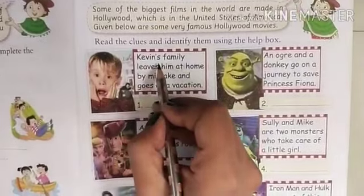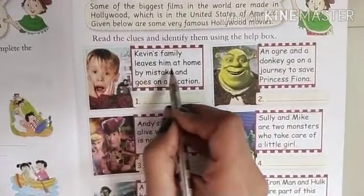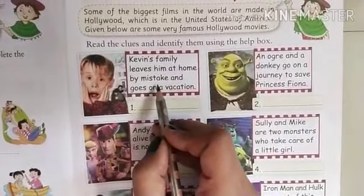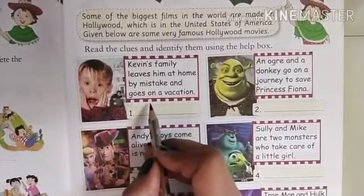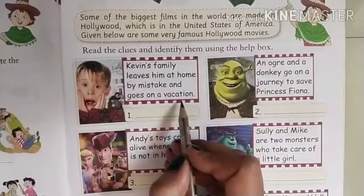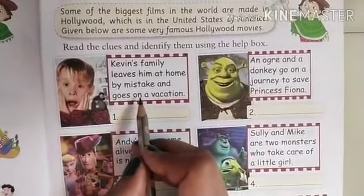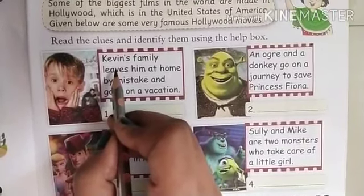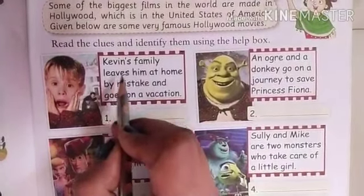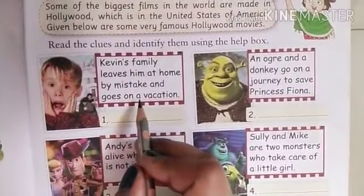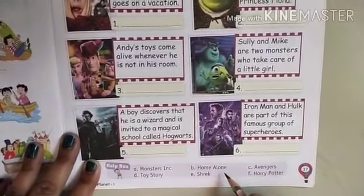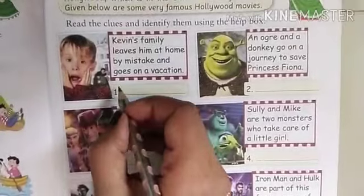First clue: Kevin's family leaves him at home by mistake and goes on a vacation. This movie is about a boy named Kevin who is left alone at home by his parents by mistake. The name of the movie is Home Alone. We will write Home Alone here.